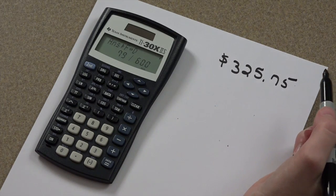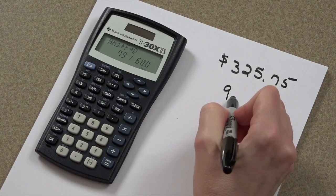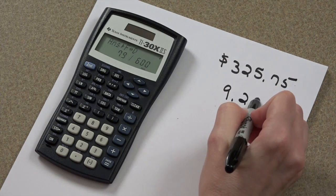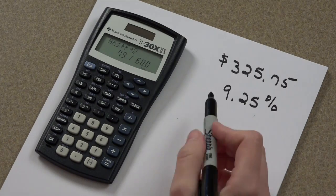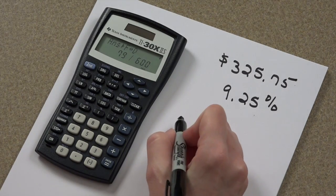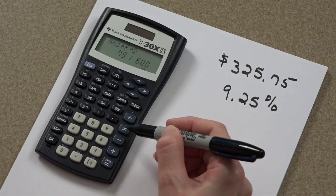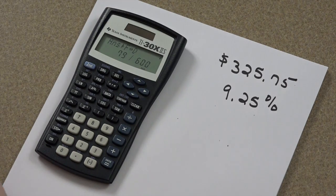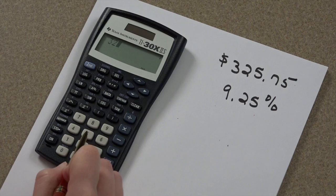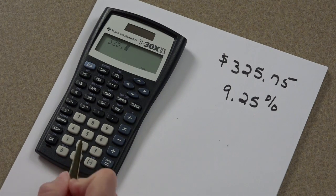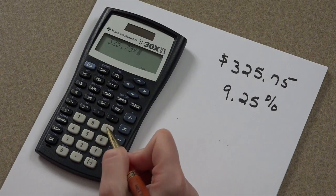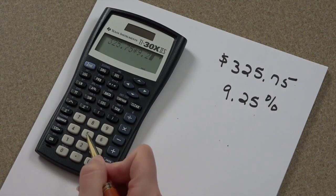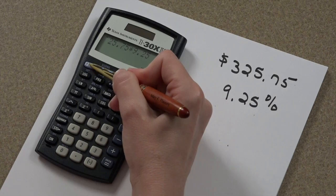The sales tax rate on that is 9.25 or 9.25 percent. The way you'll enter this into your calculator is using also your multiplication key. So, we'll have $325.75 times 9.25 percent.